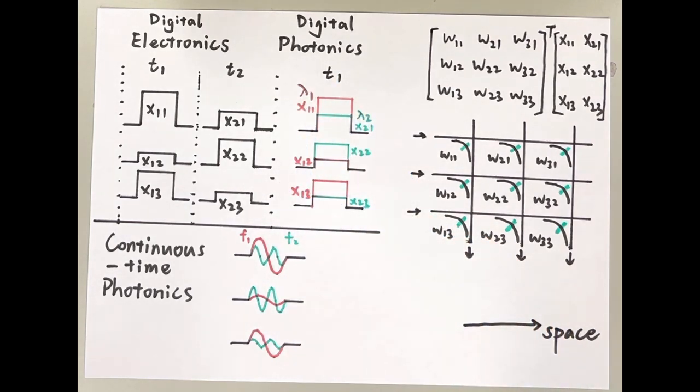Because different wavelengths will not talk to each other, the two input vectors are processed in parallel. Only a single time t1 is required because another dimension is used: the wavelength dimension.